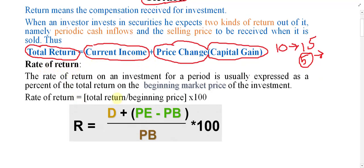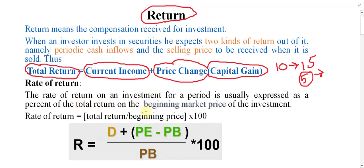The next topic is rate of return. Rate of return can be defined with this formula: rate of return is equal to total return divided by beginning price, multiplied by 100. Whatever the total return of the business is, divide it by the beginning price — meaning how much you purchased it for — and multiply by 100 to find the rate of return.